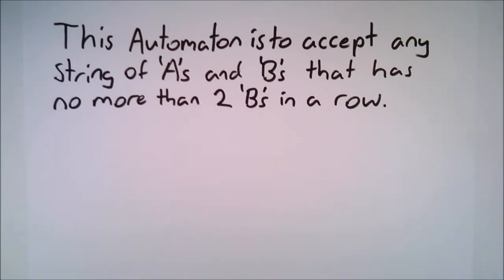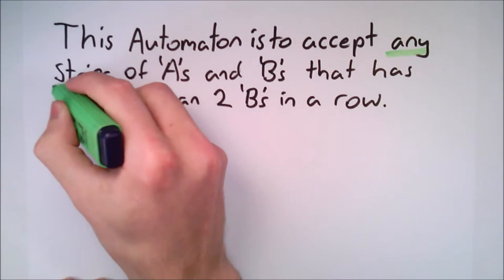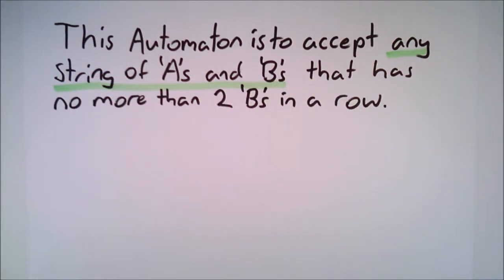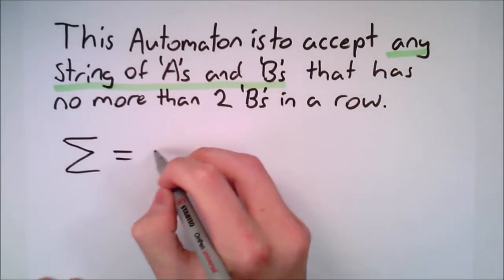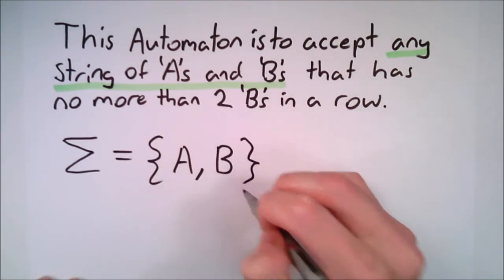Okay, we have our definition, now let's break it up to understand what it means. Any string of A's and B's. This tells us that in our alphabet we have two transition types, A and B.